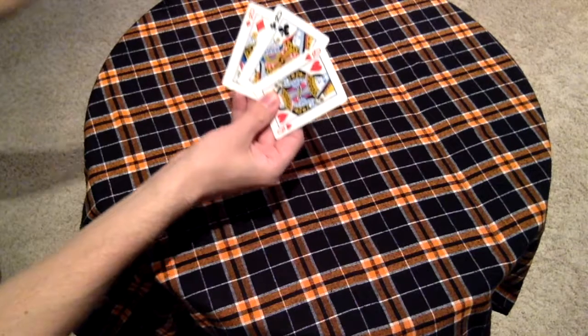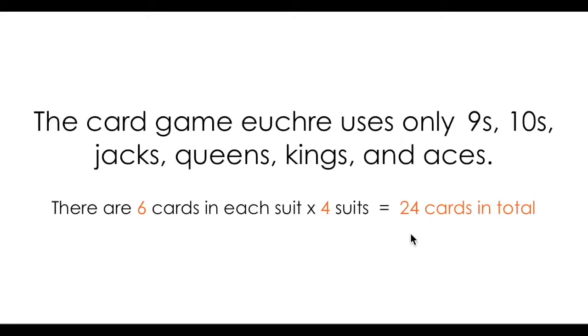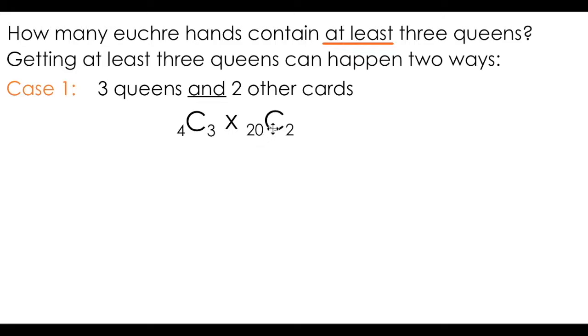So let's start by looking at the first case, having three queens and two other cards. I want to think about the number of ways that this can happen. Now we know that there are a total of four queens in this game. Because I'm dealing with combinations, I can say four choose three will give me the number of possible ways that I can get three queens. Anytime you're solving a problem involving combinations or permutations, the word and always refers to multiplication. Because I have three queens and two other cards, I'm going to multiply four choose three by the number of ways I can get two other cards. This game has 24 cards in total. If four of them are queens, that leaves 20 non-queens, and I need to choose two of them.